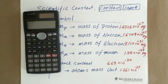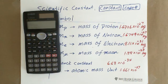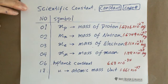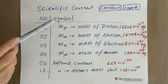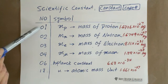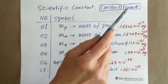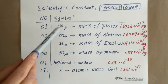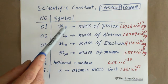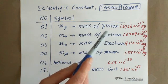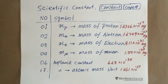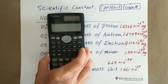For example, such as mass of proton, mass of neutron, mass of electron, mass of muon. The number here is called the code number and this is the symbol. If you want to use a constant, you first press the constant button and put the code number 01, and it shows you MP. The P means mass of proton, which is 1.6726 times 10 to the negative 27.